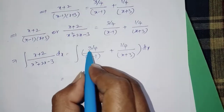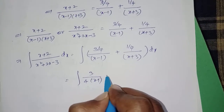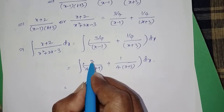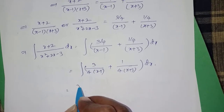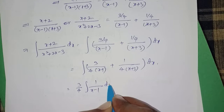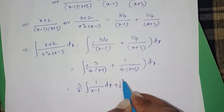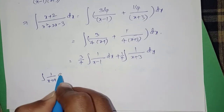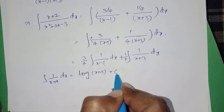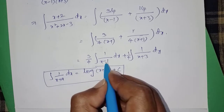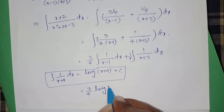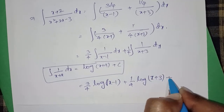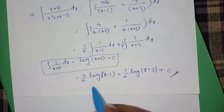Using the formula: integral of 1 upon (x plus a) dx equals log(x plus a) plus c. Applying this, the solution is (3/4) log(x minus 1) plus (1/4) log(x plus 3) plus c. This is the solution of the given question.